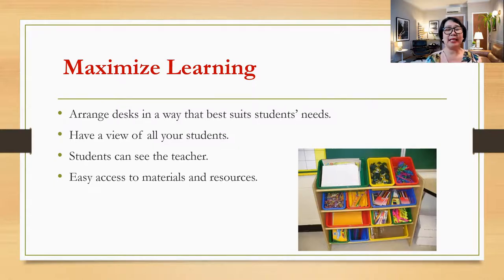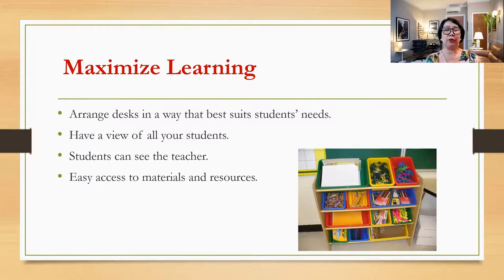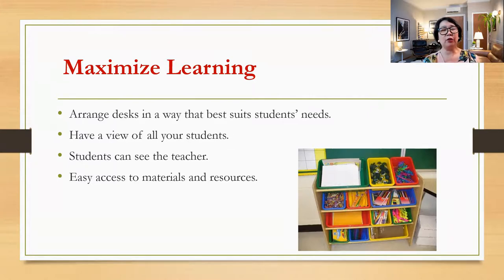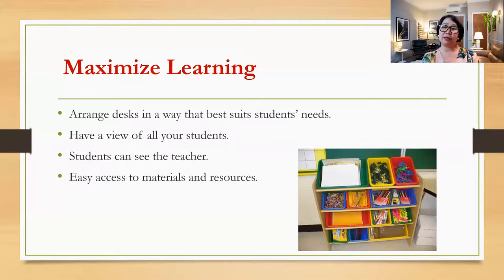There should be easy access to materials and resources. For example, you can have bins of different materials like pencils, crayons, scissors, papers, and paints. If you have little kids, your cabinets should be shorter so that kids can independently reach the things they need. At the same time, it's easy for you too — when you need those resources, you can just easily get them and put them on their desks. So make sure there's easy access to all your materials and supplies.